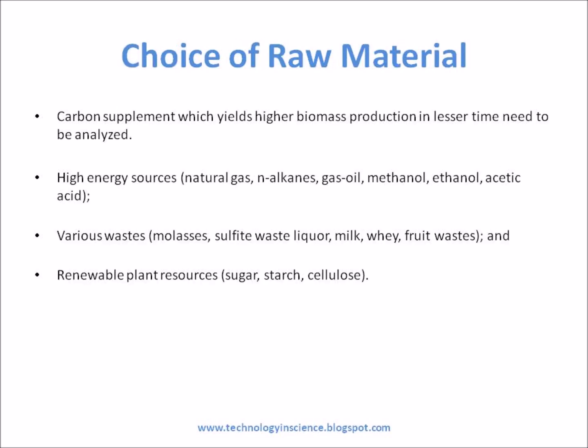Choice of raw material is a critical step. One needs to focus on the correct composition of the carbon supplement which yields higher biomass production in lesser time. Various carbon sources such as wood waste, straw, and other food processing wastes can also be tried to optimize higher biomass production.